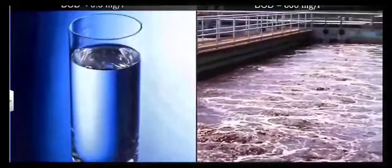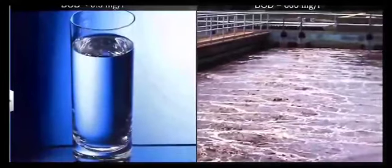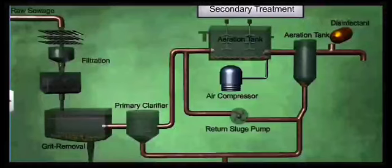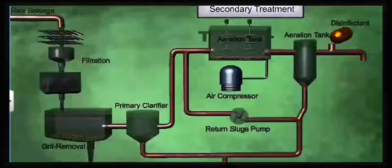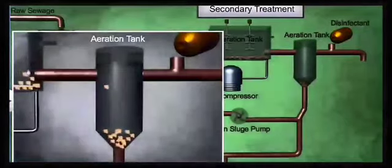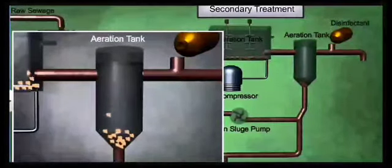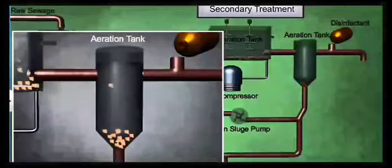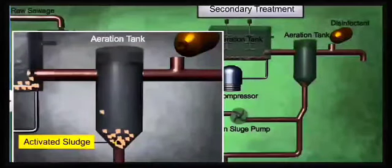Because of the aerobic treatment of primary effluent, BOD is brought down. Because of this treatment and lowering of BOD, the settled product that is formed is called activated sludge.